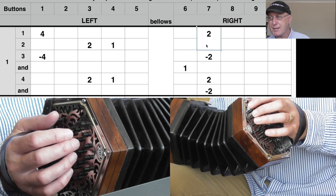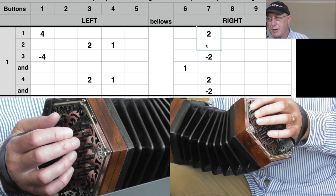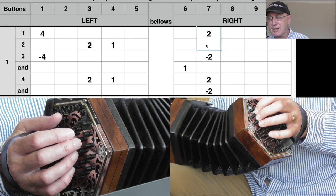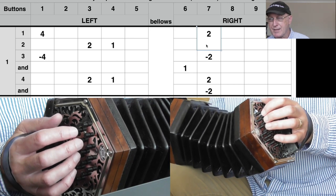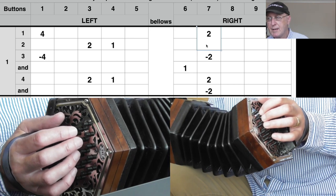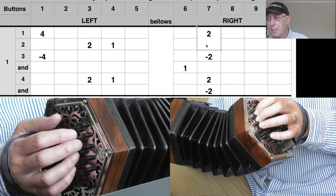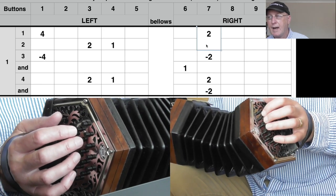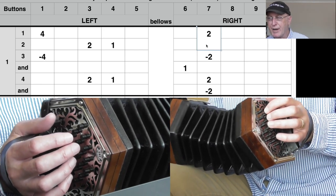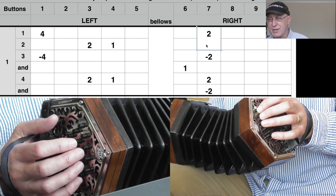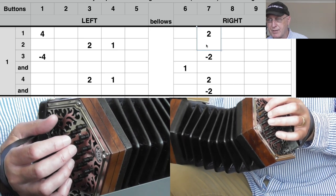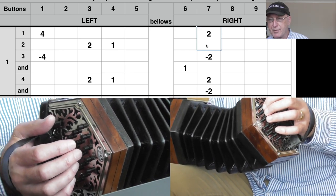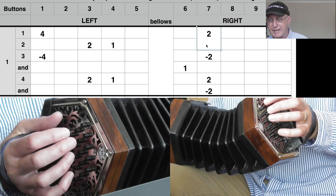You've got button seven, finger two, push and then the same button pull. And then you've got button six, finger one, push. Button seven, finger two, push then pull. And you'll notice that the first note there covers two cells so it's held for beats one and two, and then the other notes are just half a beat each.